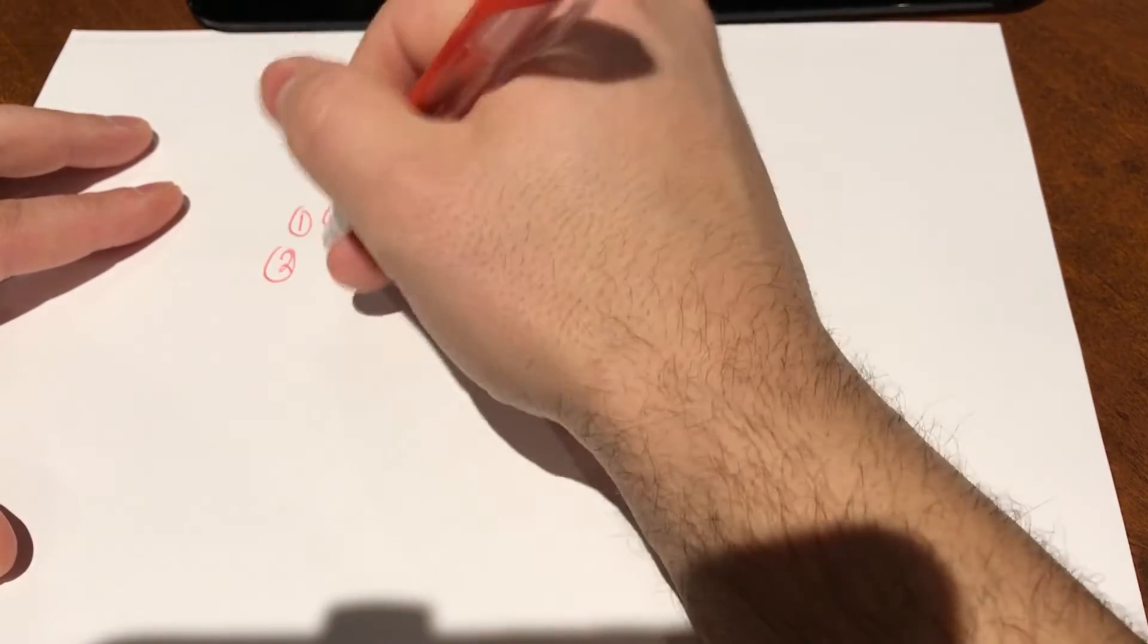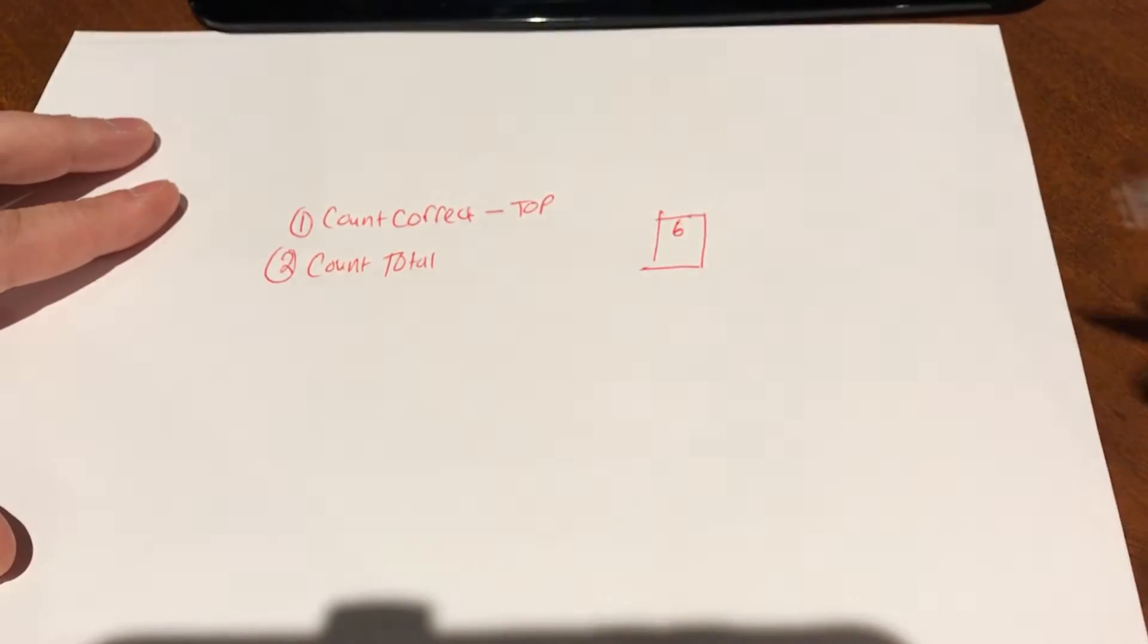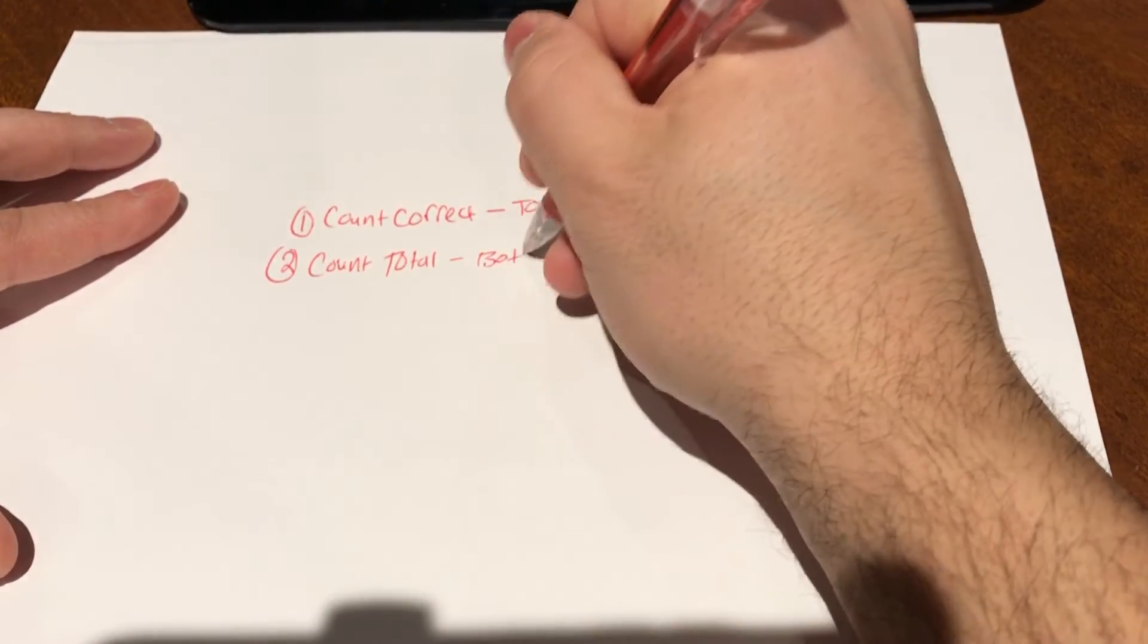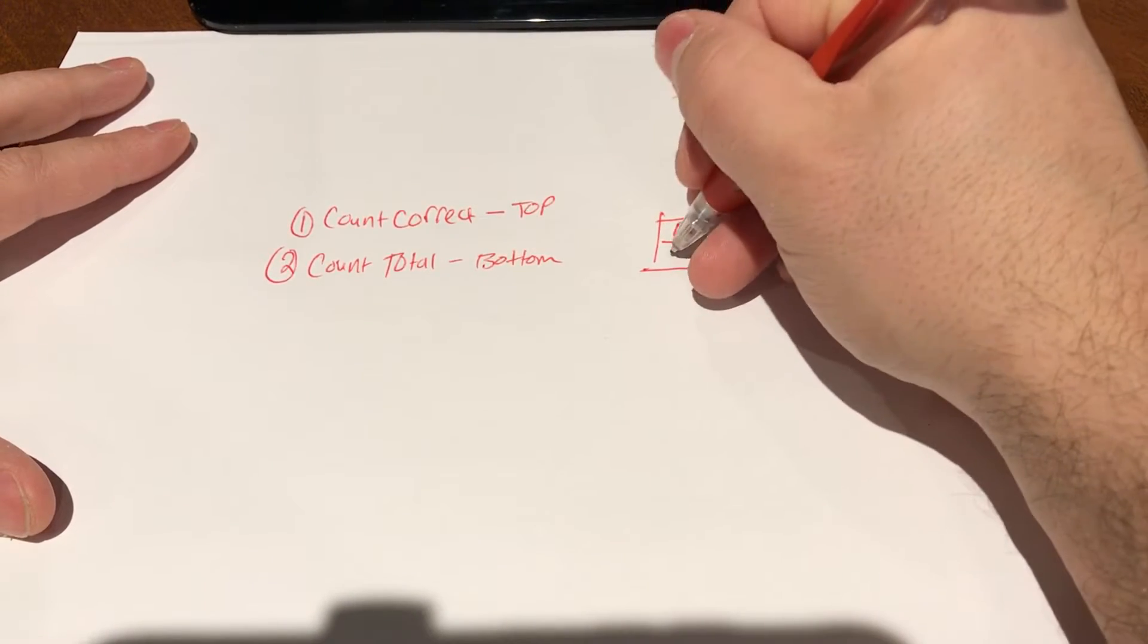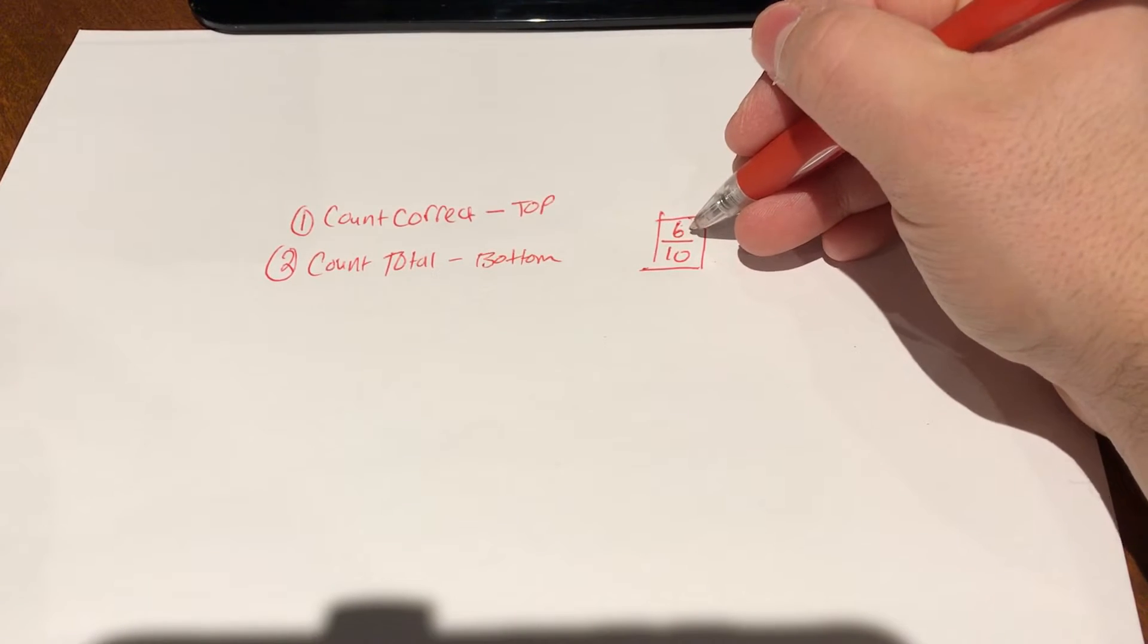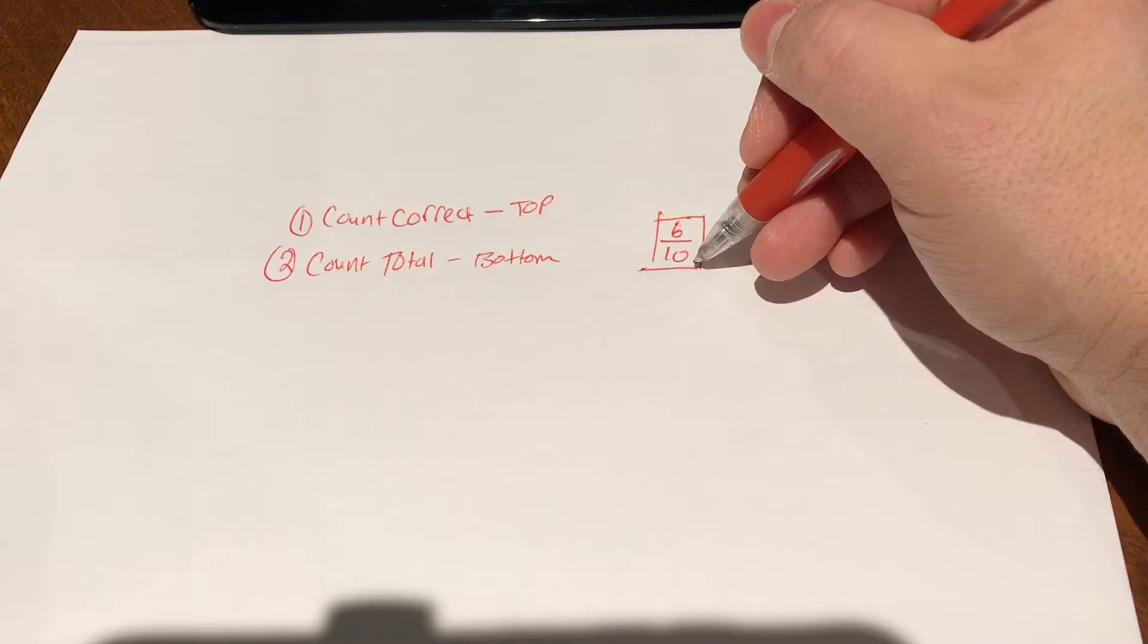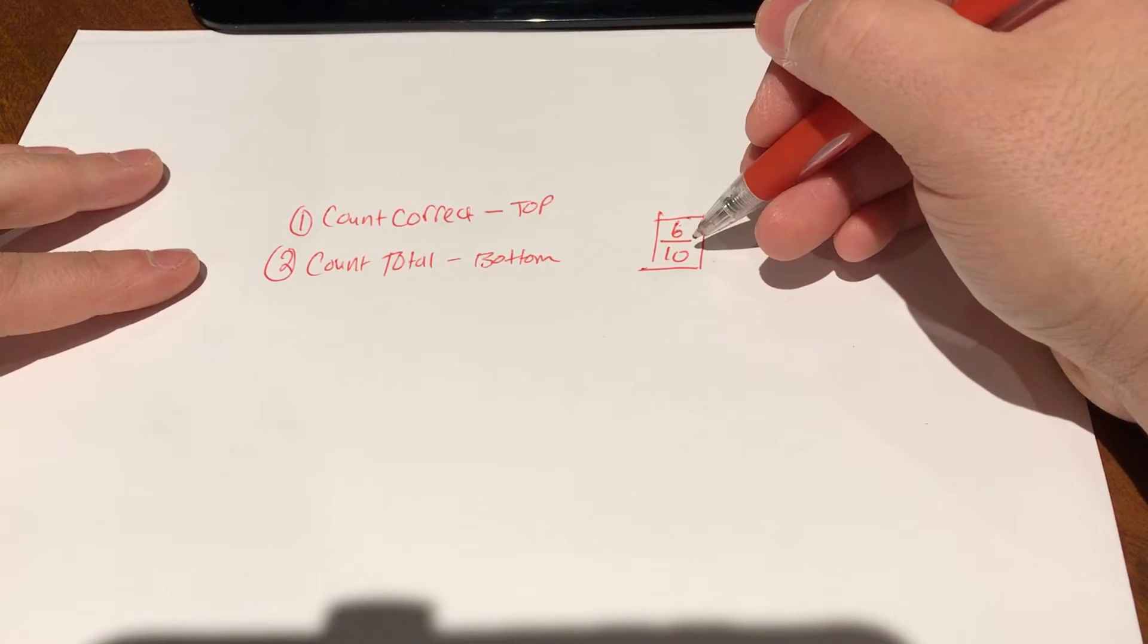Step number two is you're going to count the total possible answers that you could have received, and you're going to put that number on the bottom. So let's say that I could have received 10 marks in total. So just to clarify, I got six answers correct and I could have received 10 in total. So I got six out of 10 correct. That's already the first two steps.